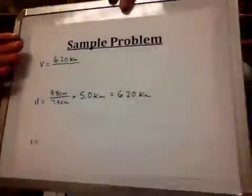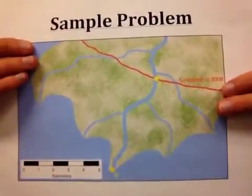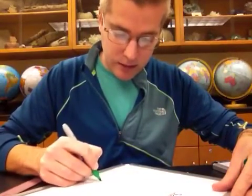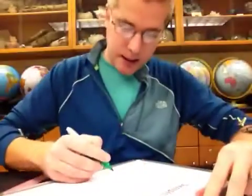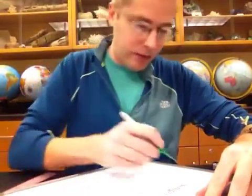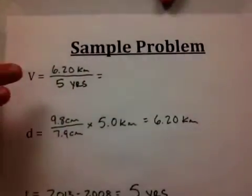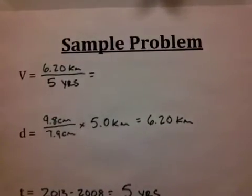To figure out time, we have the coastline in 2008 and the map was made in 2013. So we're going to subtract those two numbers. 2013 minus 2008, the time period that has elapsed is 5 years. We throw that into our velocity equation as well because v equals d over t, so the 5 years goes into the bottom of the fraction.